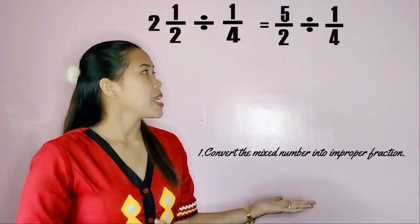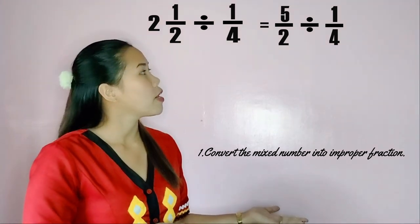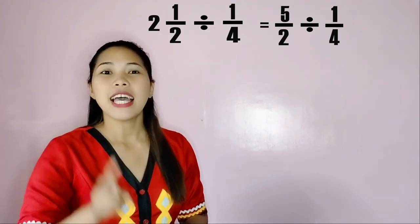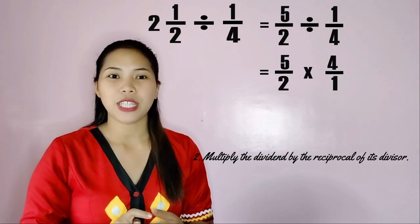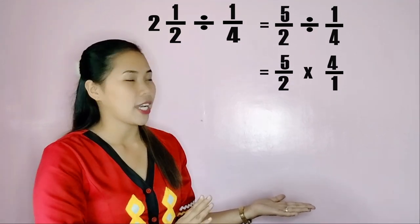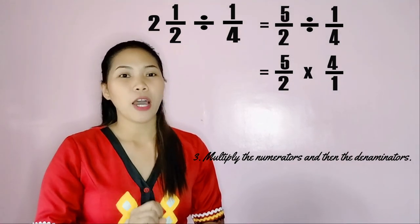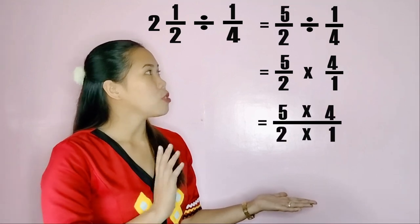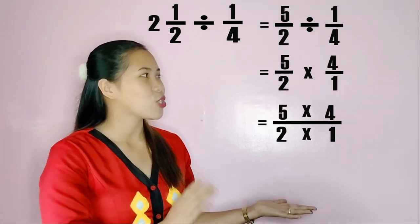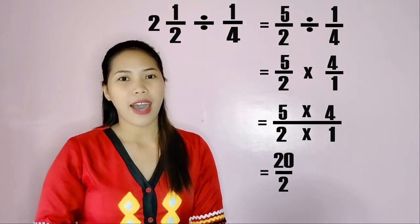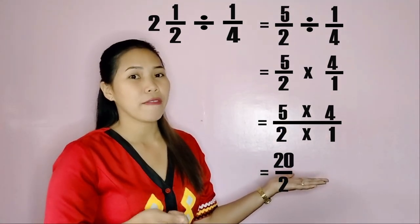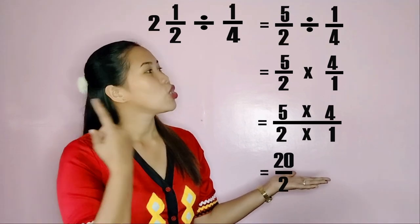First, convert the mixed number into an improper fraction. So, two times two plus one equals five, and then we copy the denominator two. Second, multiply the dividend by the reciprocal of its divisor. When we get the reciprocal of one-fourth, one-fourth becomes four over one. Third, multiply the numerators and then the denominators. So, five times four equals twenty, and the denominators two times one equals two. So now we have twenty over two, or twenty halves. Convert the improper fraction into a mixed number — we divide the numerator by the denominator: twenty divided by two equals ten.